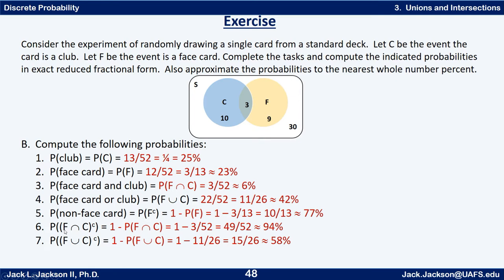Let's be careful with the last two — these are a little interesting. The complement of face intersect clubs: that means it's not those three cards. So it's one minus P(F∩C), which we already figured out to be 3/52. So one minus that is 49/52, or about 94%. The complement of face union club — meaning not a face or a club — we take P(F∪C) which we found to be 11/26, then do one minus that: 15/26, or 58%. Notice I used the complementary probability rule here.